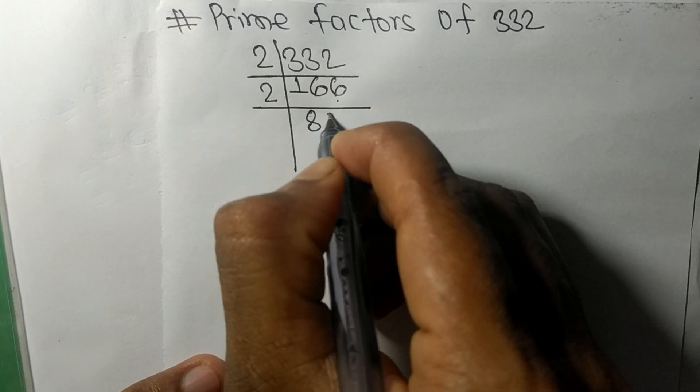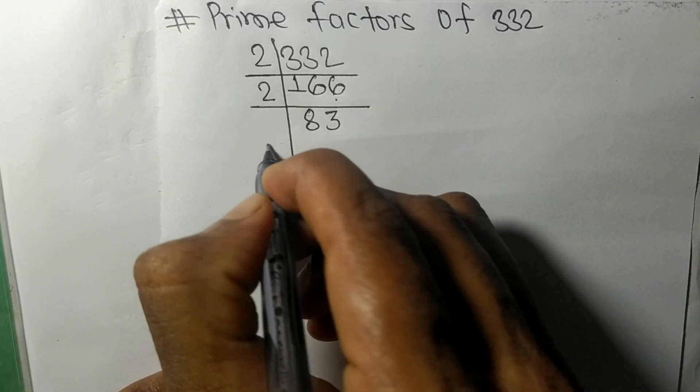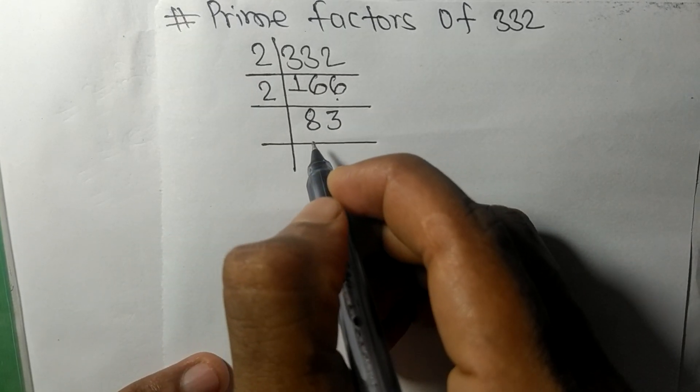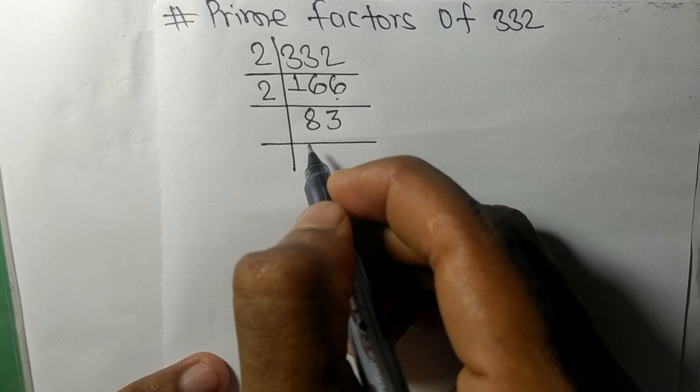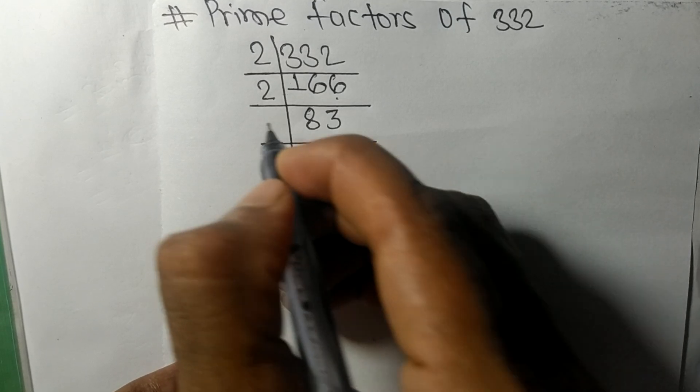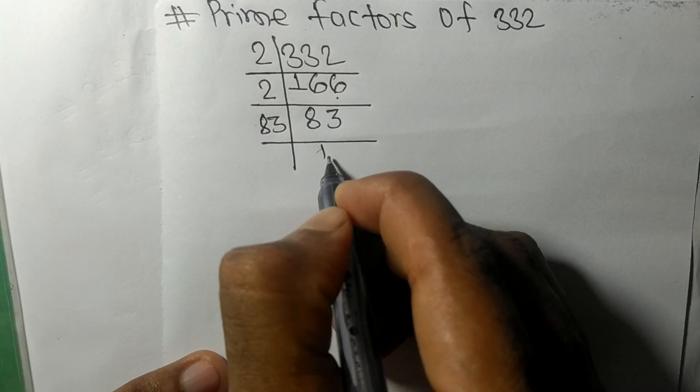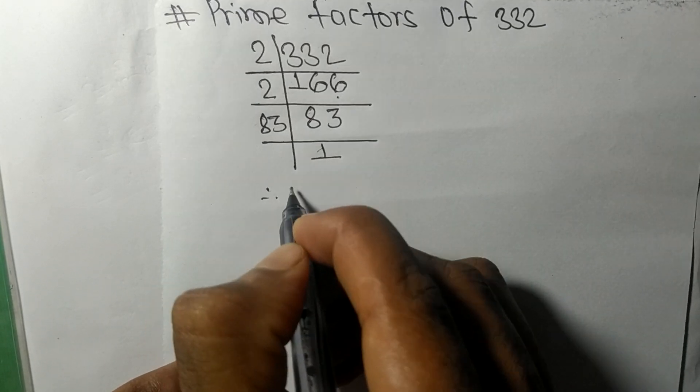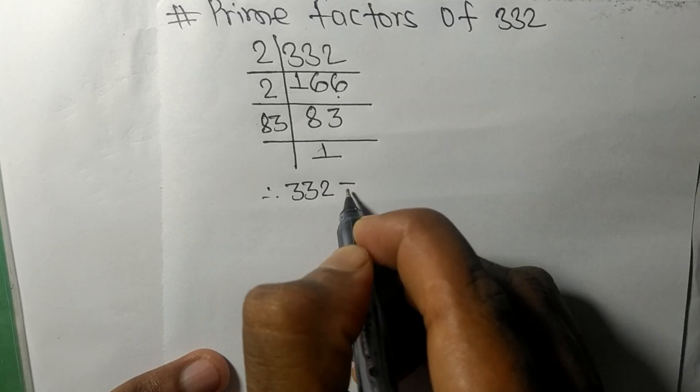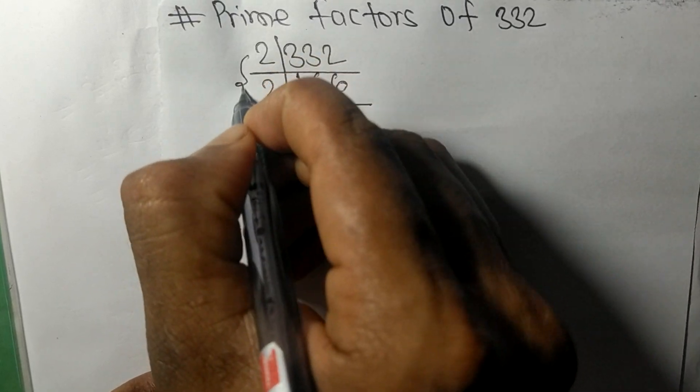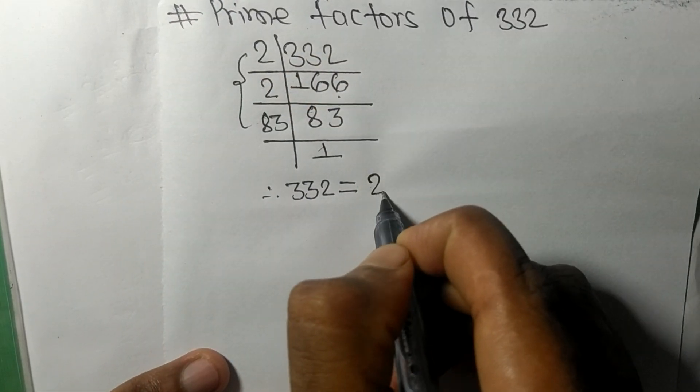2 times 3 means 6. So now we got here 83, which is our prime number, so it is divisible by 83 itself and we get here 1. Therefore 332 is equal to, from this side, it is 2 times 2 times 83.